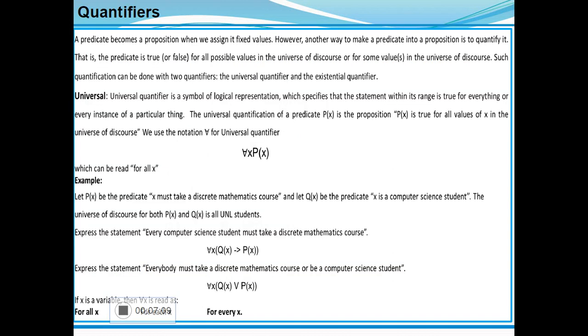In dependent types, we have to know about quantifiers. A predicate becomes a proposition when we assign it an exact value. Predicate is true for all possible values in the universe of discourse, and for some values in the universe of discourse. Such quantification can be done in two forms: one is universal quantifier, another one is existential quantifier. First, universal quantifier. Universal quantifier is a symbol of logical representation, which specifies that a statement within its range is true for all elements or all instances in every element in a particular thing. The universal quantification of predicate P(x) is the proposition P(x) is true for all values of x in the universe of discourse. The general notation is: for all x, P(x).